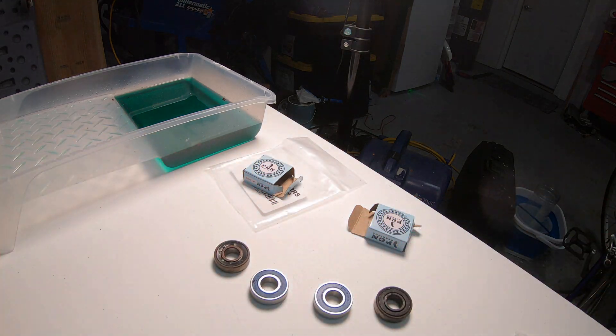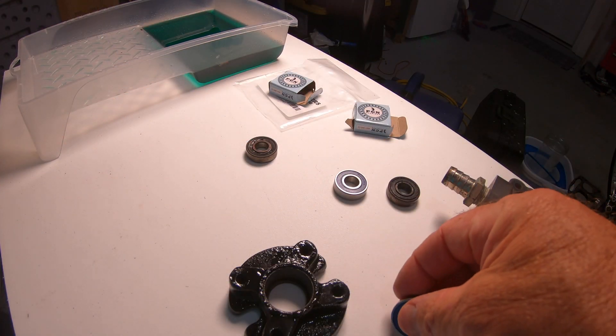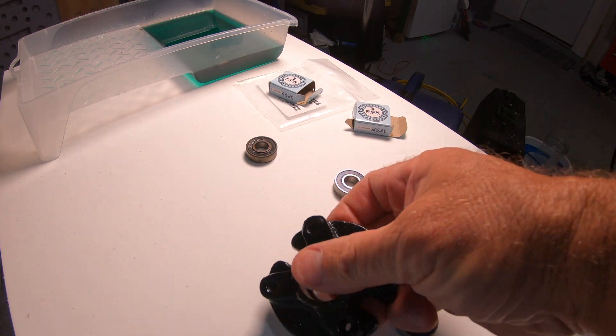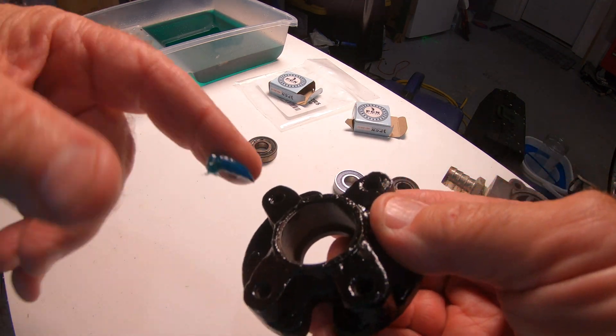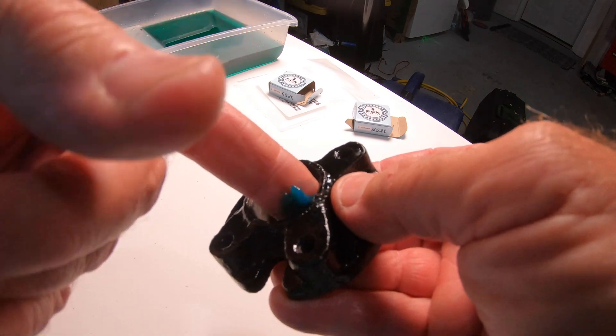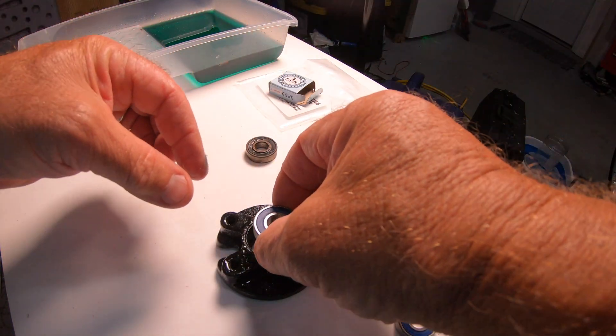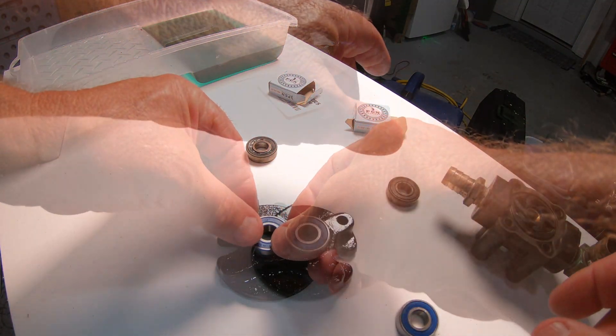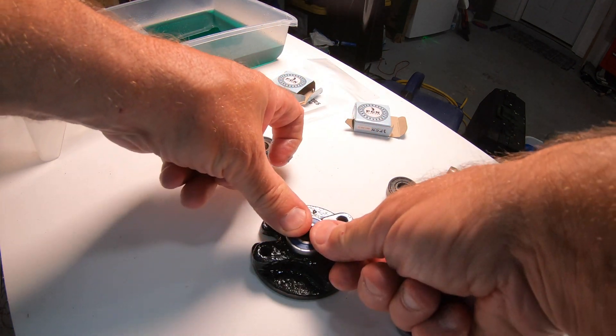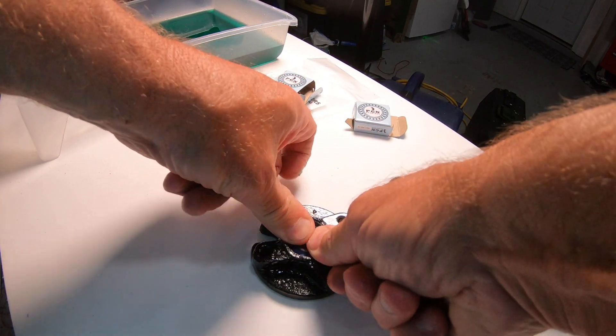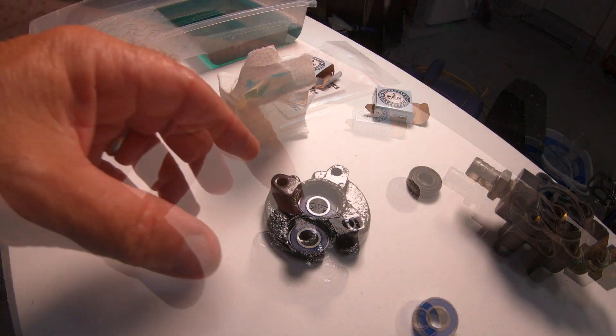I sprayed the cast iron body with some black paint - Mercury Black as a matter of fact - and then put some grease inside of that race. The bearing actually just pushed into place. With larger bearings sometimes you have to use a hydraulic press, but this one actually just popped into place.